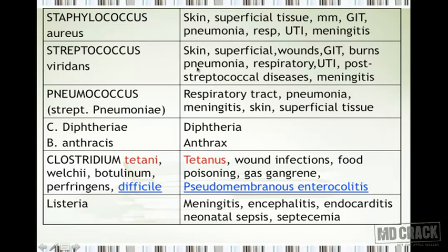Whenever you want to describe the antibacterial spectrum of an antimicrobial agent, always think about which gram-positive organisms are affected and follow this order so you don't miss anything: Staphylococcus, Streptococcus, Pneumococcus, then Corynebacterium diphtheriae and Bacillus anthracis, then Clostridium species (tetani, welchii, etc., and difficile), and finally Listeria.